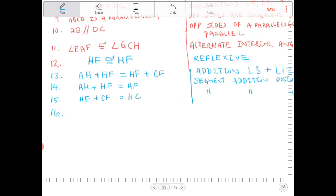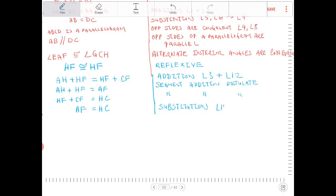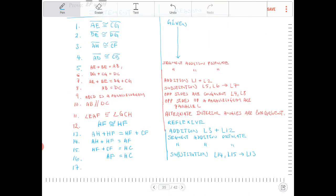And then I am going to combine 14, 15, and 13 together. I'm going to perform a substitution. Since AH plus HF is equal to AF, I'm going to replace the left side of the equal symbol in line 13 with AF. And I'm going to replace the right side of line 13 with HC, because I know that HF plus CF is equal to HC. And this is because of substitution. So this is substituting, I am substituting lines 14, 15, into 13.